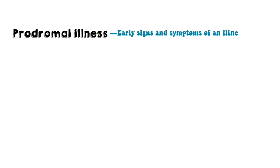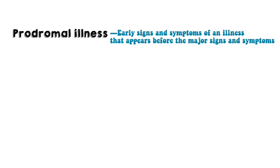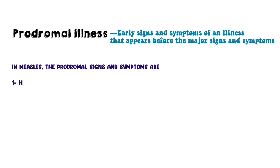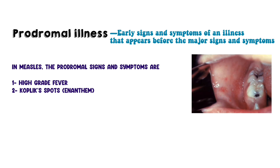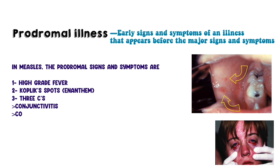Prodromal illness refers to early signs and symptoms of an illness that appear before the major signs and symptoms. In measles, the prodromal signs and symptoms are high-grade fever, Koplik spots (the enanthem), and the three C's: conjunctivitis, cough, and coryza, which is the runny nose.